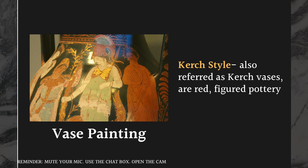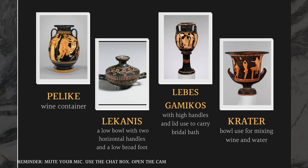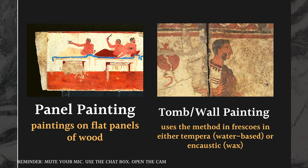There is also vase painting using the scourge style, referring to red-figured pottery. Different vessel types include the pell-like, a wine container; the lecanis, a low bowl with two horizontal handles and a low broad foot; the lebes kimikos with high handles and a lid, used to carry a bridal bath; and the crater, a bowl for mixing wine and water. There is also panel painting on a flat panel of wood, and tomb or wall painting using fresco, tempera, or encaustic.